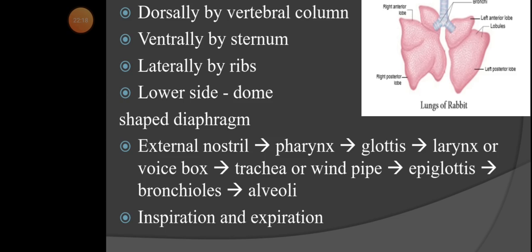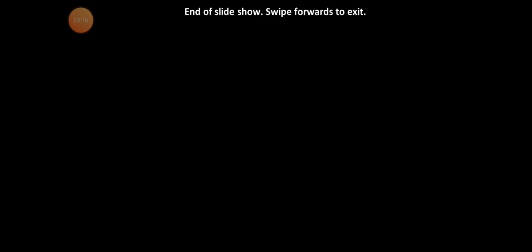The trachea branches into two bronchi, which further divide into many bronchioles. Each bronchiole ends in alveoli — small microscopic sac-like structures where oxygen is stored and taken by body cells, and where unwanted CO2 is stored and exhaled. The overall respiration process is divided into inspiration (oxygen inhaled inside) and expiration (CO2 exhaled outside).